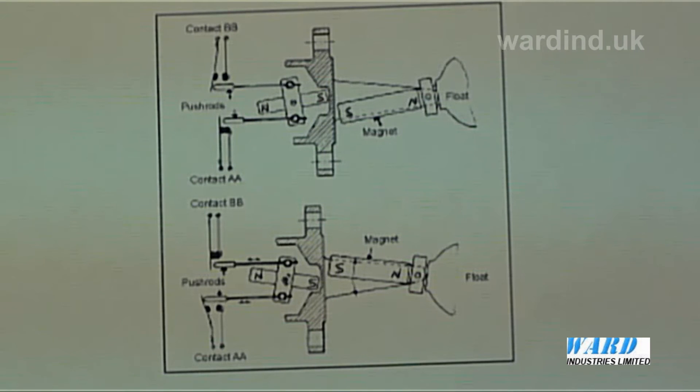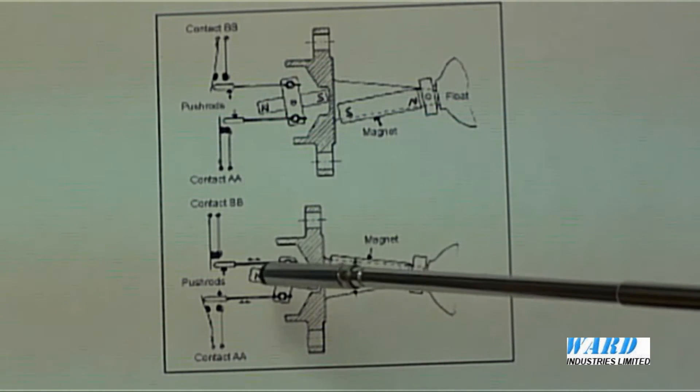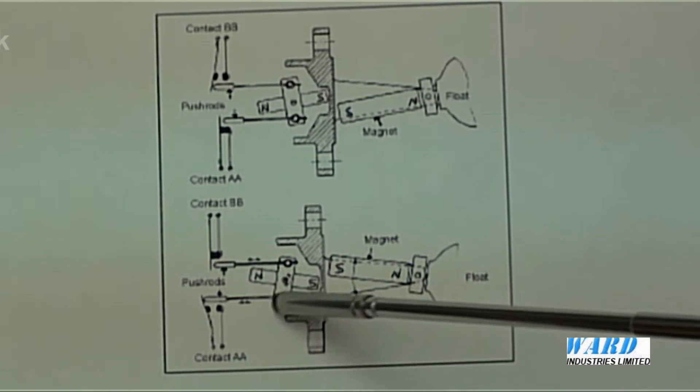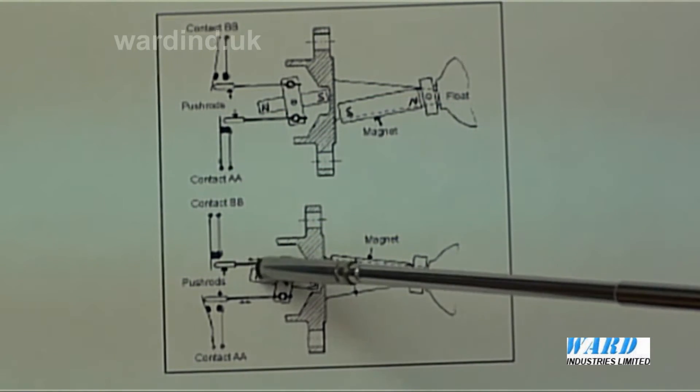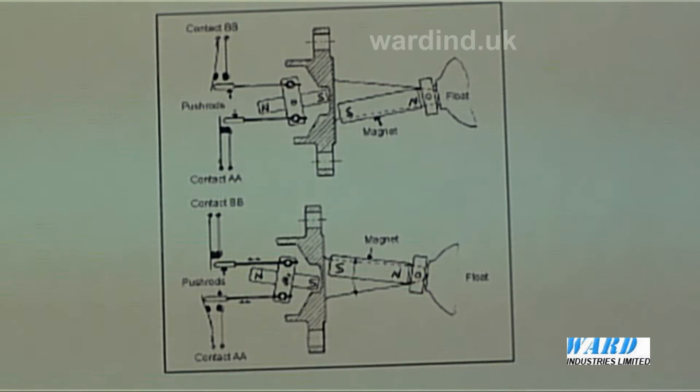Switching is accomplished by the angular movement of the switch magnet being used to operate push rods. These rods bear on the contact blades and break one set of contacts whilst allowing the other set to make.